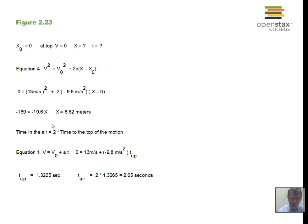For the time in the air — going up and coming down — the motion is symmetrical. We calculate the time to the top of the motion and multiply by 2. Using equation 1, with the velocity at the top equal to zero, starting at 13 meters per second, and acceleration of minus 9.8, the time to go up is 1.3265 seconds. Doubling that gives 2.65 seconds total time in the air.